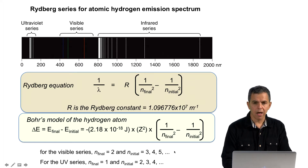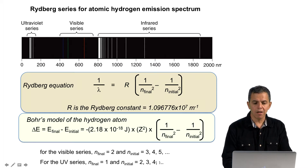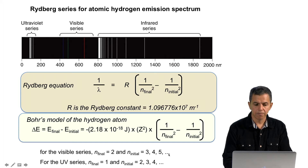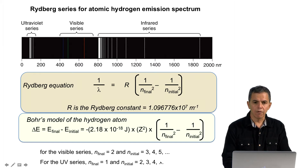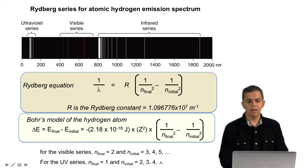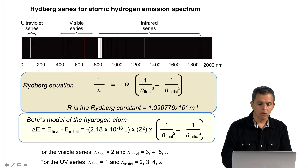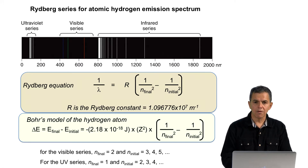As indicated at the bottom of this slide, for the visible series the n final is always equal to 2 for the hydrogen atom, and n initial will be something larger — 3, 4, 5, etc. For the UV series, n final is equal to 1, and n initial is something larger than 1 — 2, 3, 4, 5, etc. And for the infrared, n final is equal to 3, and n initial is something higher than 3 — 4, 5, 6, etc.